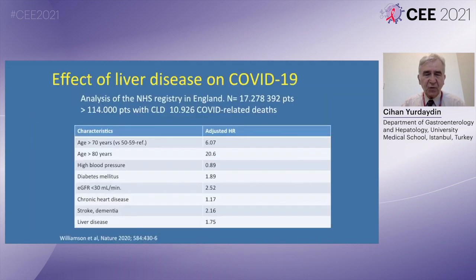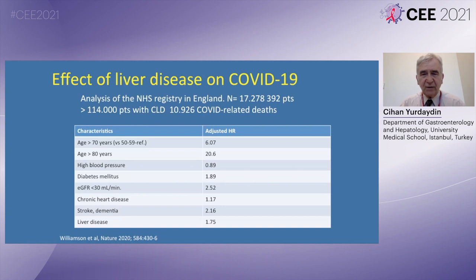The impact of cirrhosis has been shown in early studies. When we speak about chronic liver disease, we have to mention that cirrhosis is the main thing which causes significant disease severity and mortality. One of the first studies dealing with this subject was from England, published in Nature in Spring 2020, based on analysis of the National Health Service Registry in England, encompassing almost 11,000 COVID-19-related deaths.